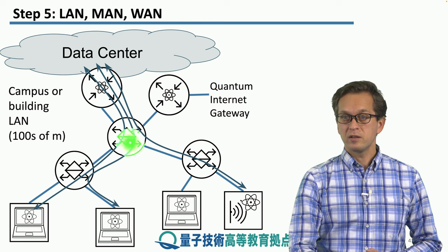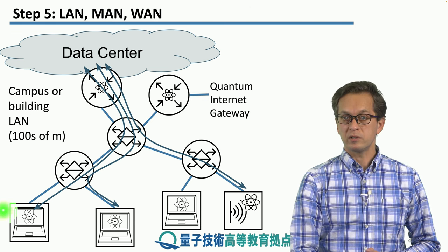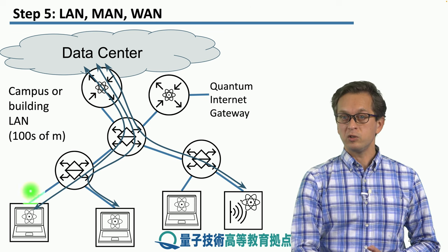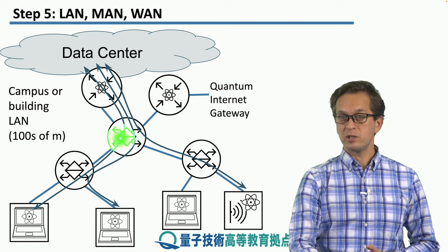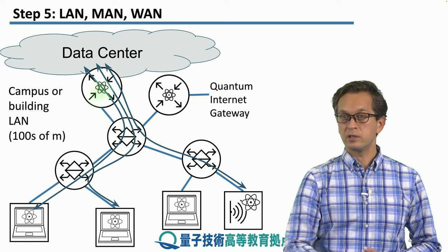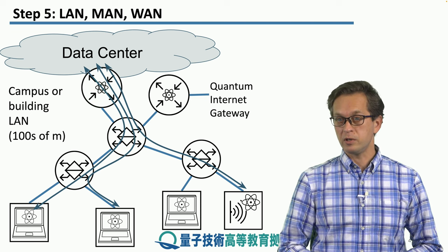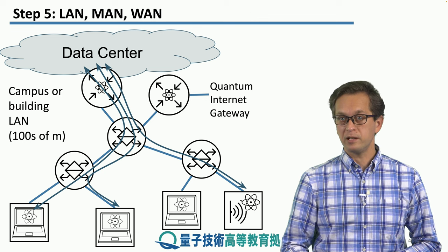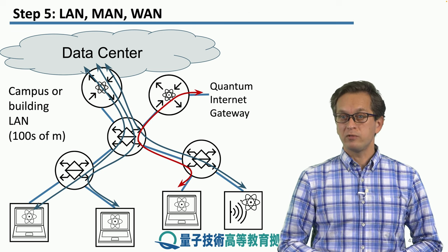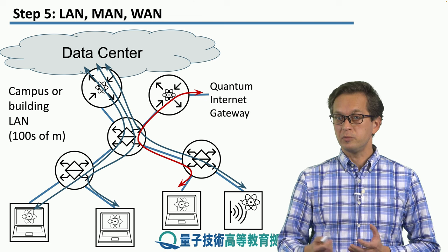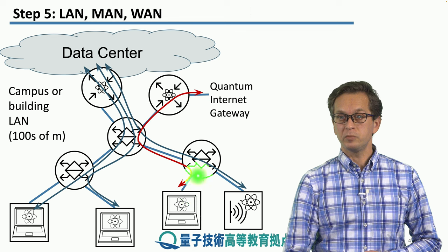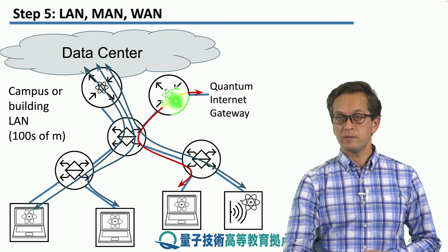Here is a particular traffic pattern. This is what happens when this computational node wants to talk to the quantum data center — it needs to pass through this switch, this switch, and then finally the gateway router connecting to the front-end servers of the quantum data center network. And if one of the nodes wants to talk to the quantum internet or some other network, then they have to go via the quantum internet gateway over here.